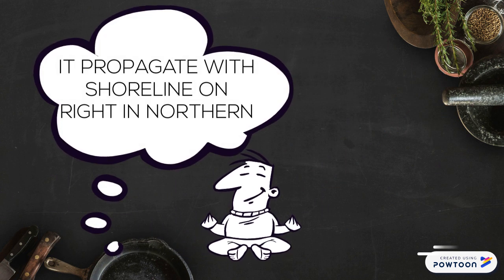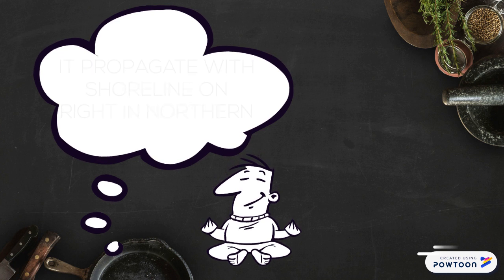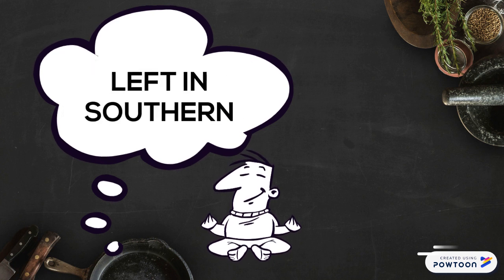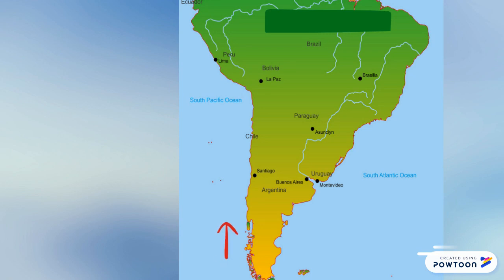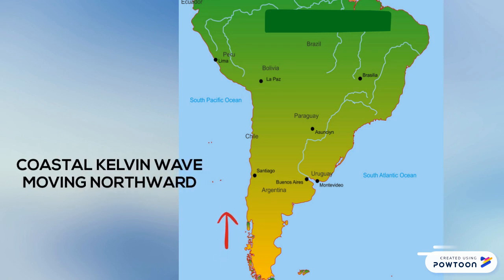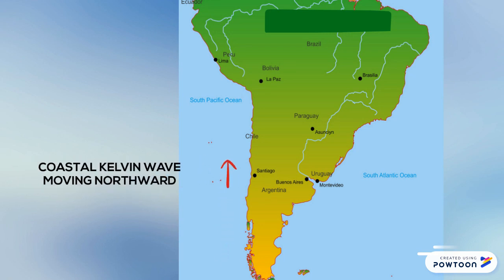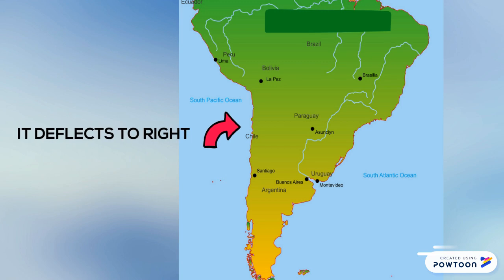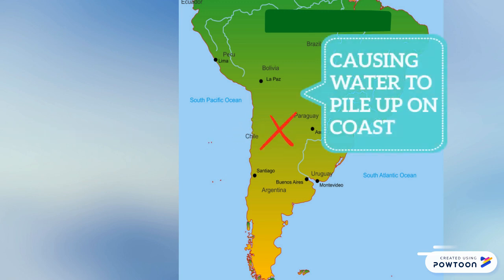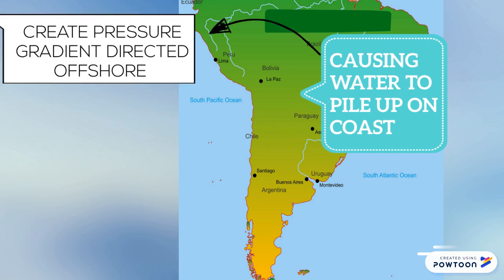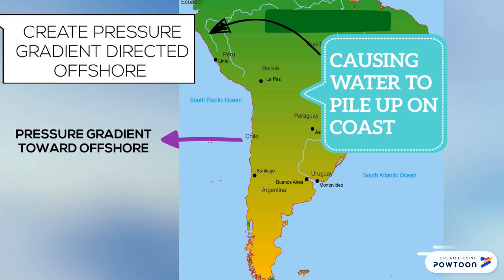A southern coastal Kelvin wave moves northward and then deflects toward the right due to resistance from the coast. This causes water at the coast to pile up, which creates a pressure gradient force toward offshore and produces a geostrophic current northward.